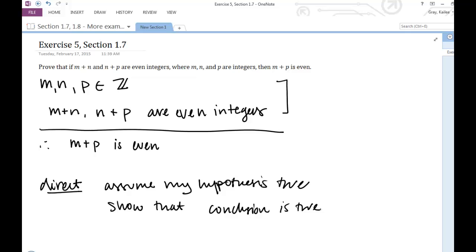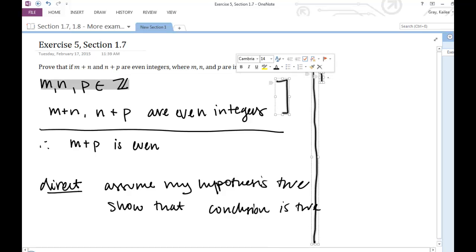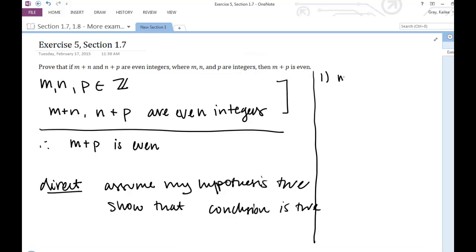So, what I'm going to do first, I'm not going to jump into the proof. I'm just going to try to understand what I have going on. So I'm going to start with my assumption that I'm just declaring these as integers. And then I'm going to say m plus n, n plus p, even. Now I've introduced a term that has some sort of definition. So I want to make sure that I understand what that definition would give me.